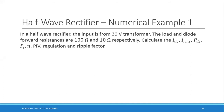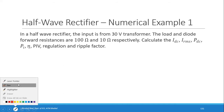Today we will solve some numerical examples on half wave rectifier. The first problem: in a half wave rectifier, the input is from a 30 volt transformer. The load and diode forward resistances are 100 ohms and 10 ohms respectively. You are asked to calculate IDC, IRMS, PDC, PI, eta, PIV, regulation, and ripple factor.